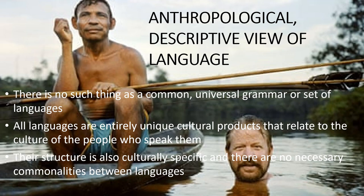The picture on screen is a still from an article about a book called The Grammar of Happiness by Dan Everett, showing him in the water next to a member of the Piraha tribe from the Amazon, where he had gone to study their language. Dan Everett became quite famous — or perhaps infamous — for arguing that the Piraha language had no recursion in it. You will remember the concept of recursion from the very first lecture. If this were true, it would probably be the only human language that did not have recursion. This is not a problem from the anthropological descriptive perspective, because this perspective aims to characterize each language in its own terms — so if a language doesn't have recursion, that's just the way that language is.